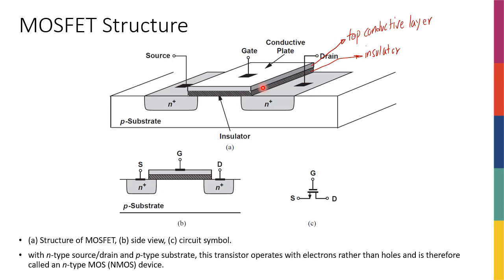If you're talking about a chip or CPU of a computer or cell phone, all transistors — and there could be millions or billions of transistors — all of them on that chip are going to share the same substrate. But the insulator and the conductive plate on top connected to the gate are going to be dedicated for each transistor.